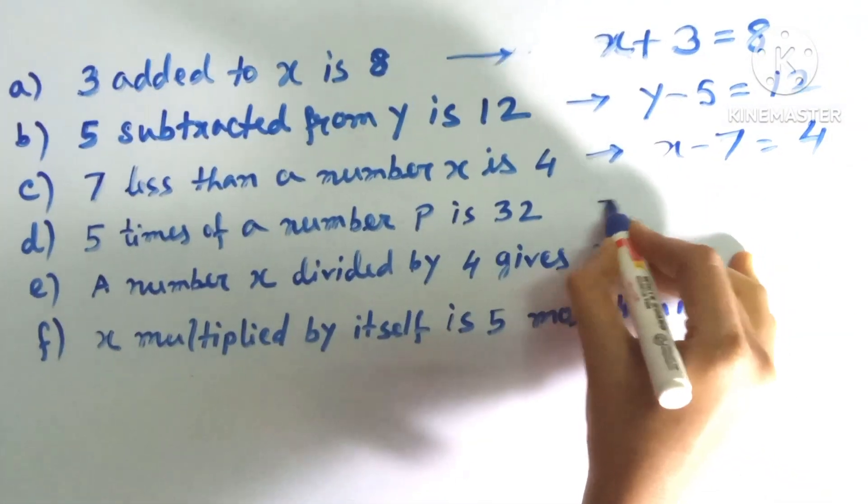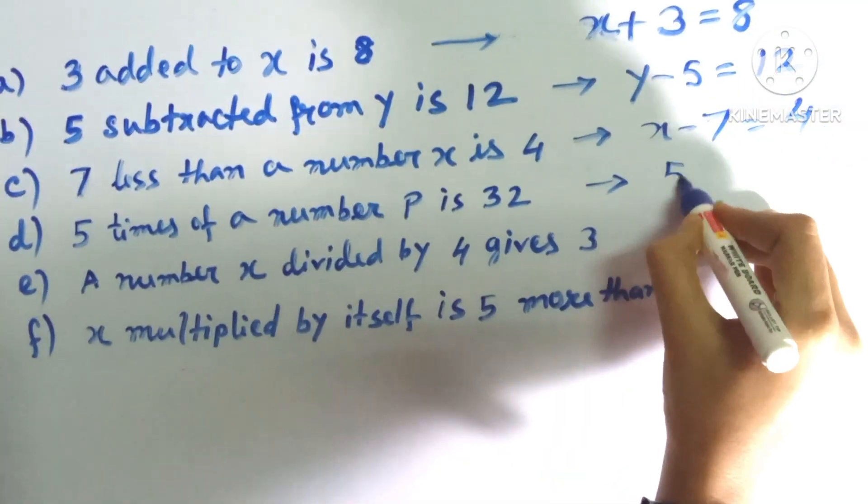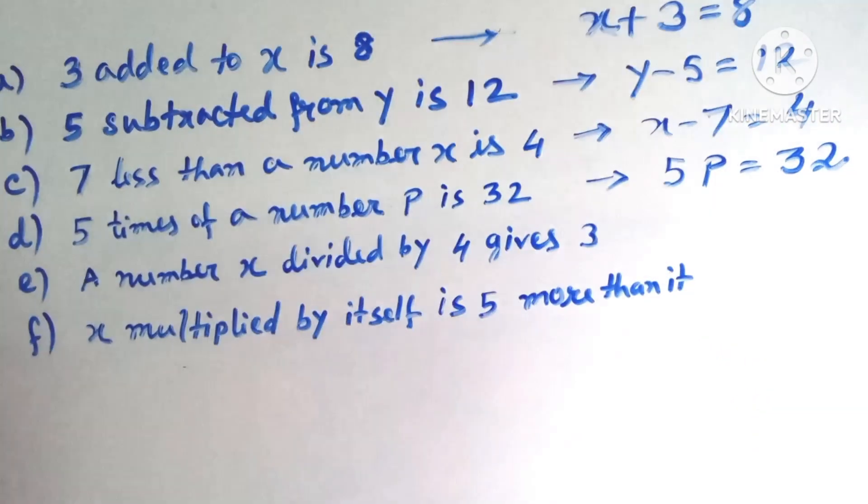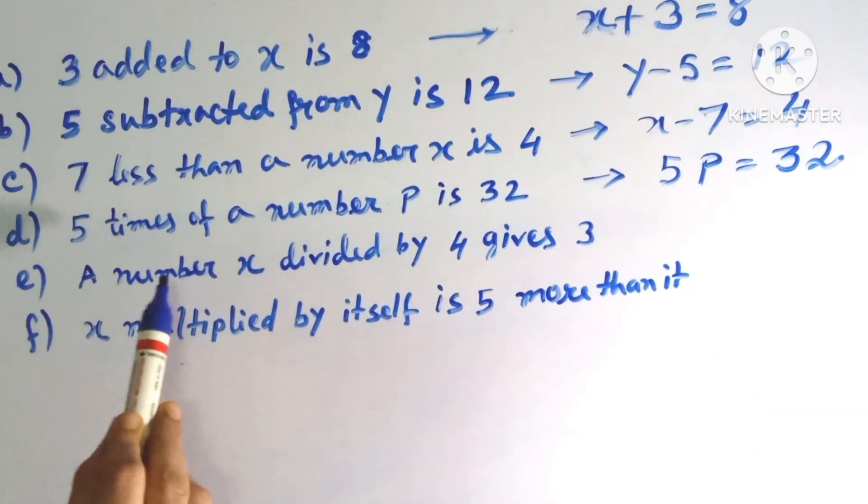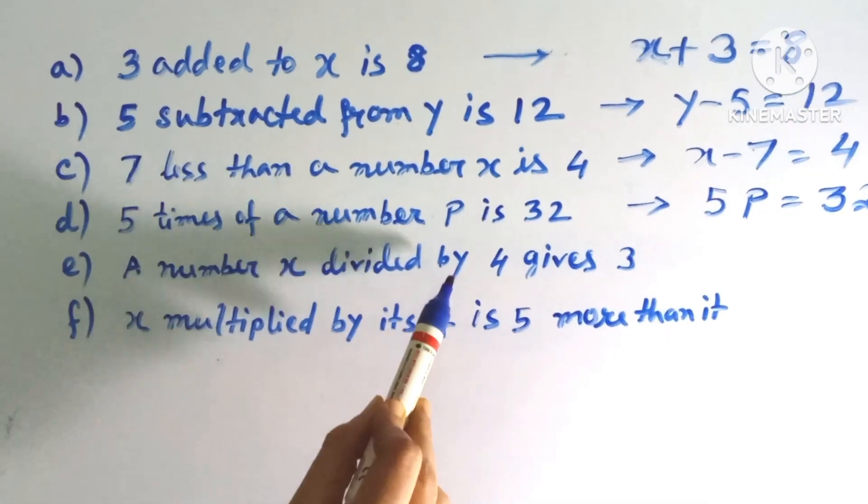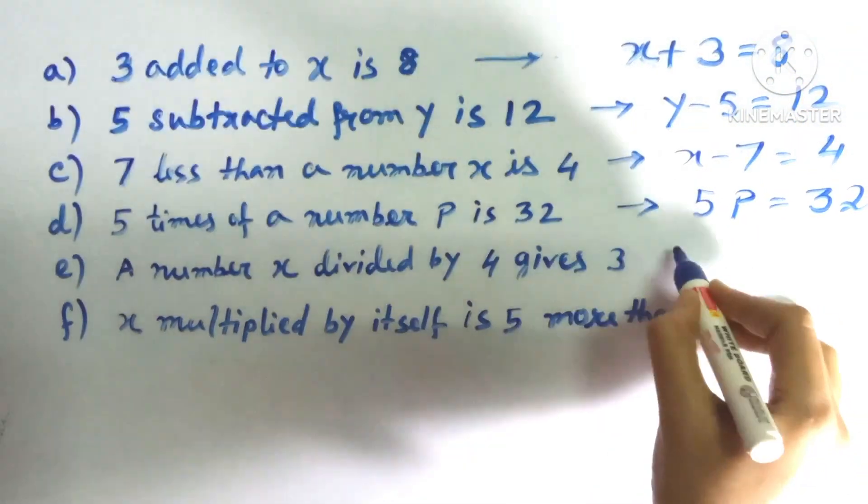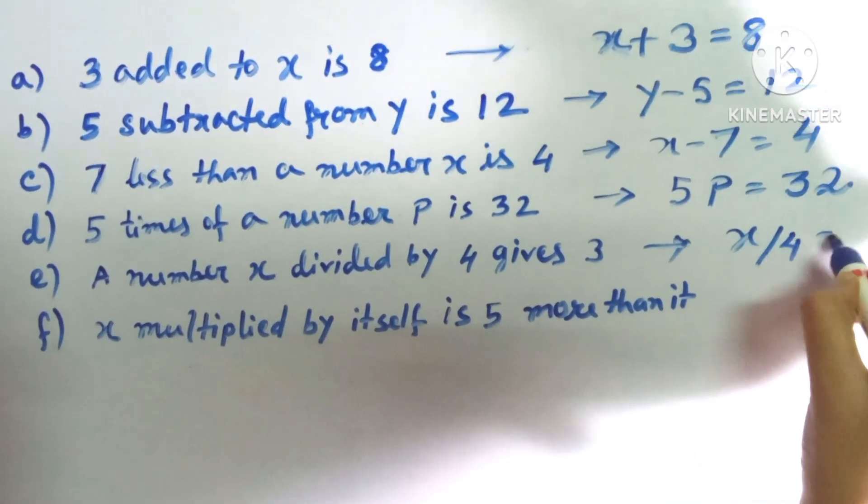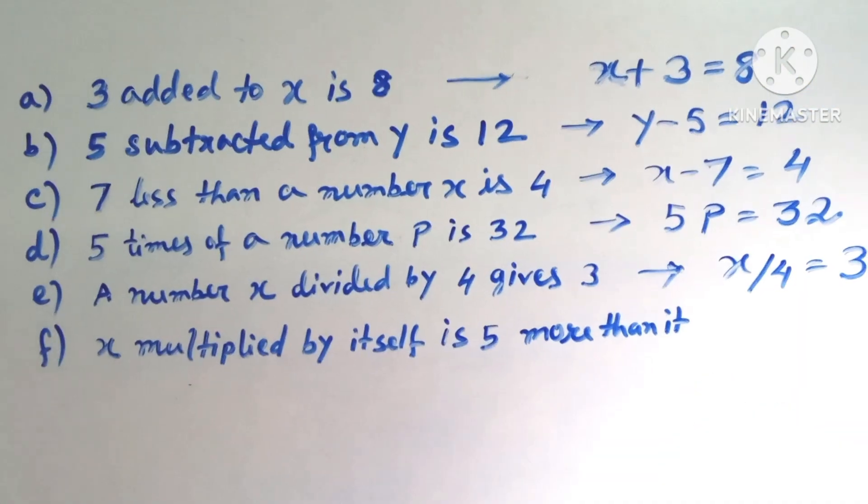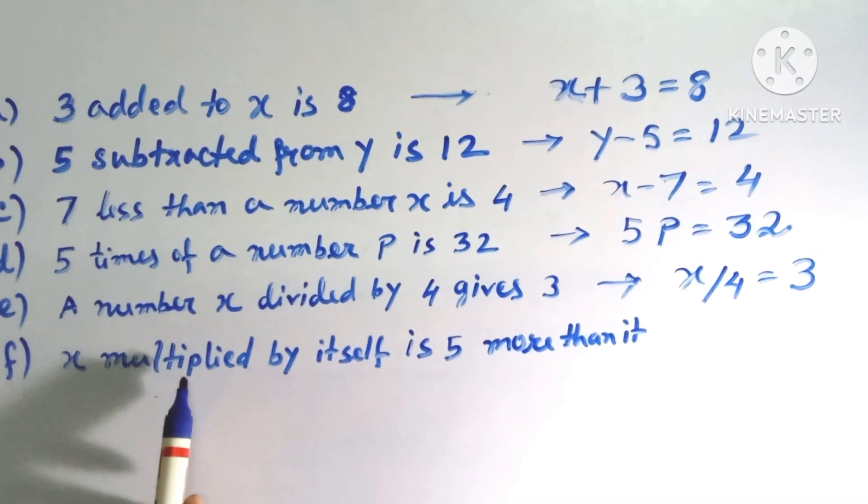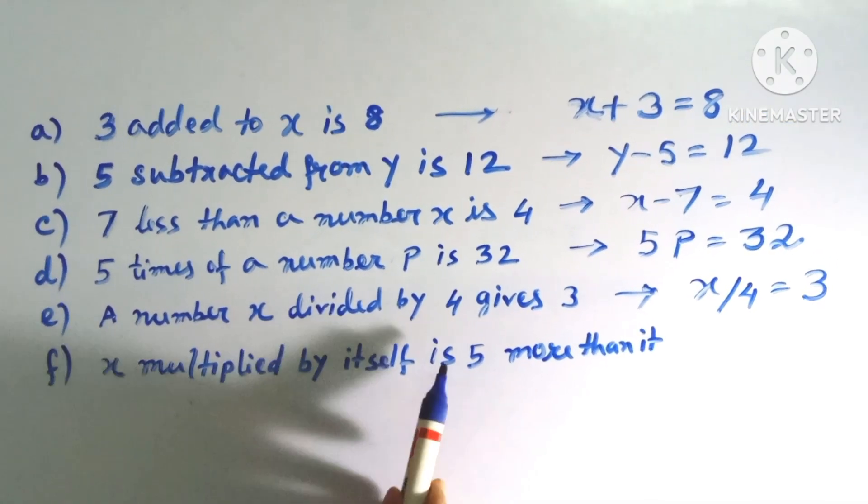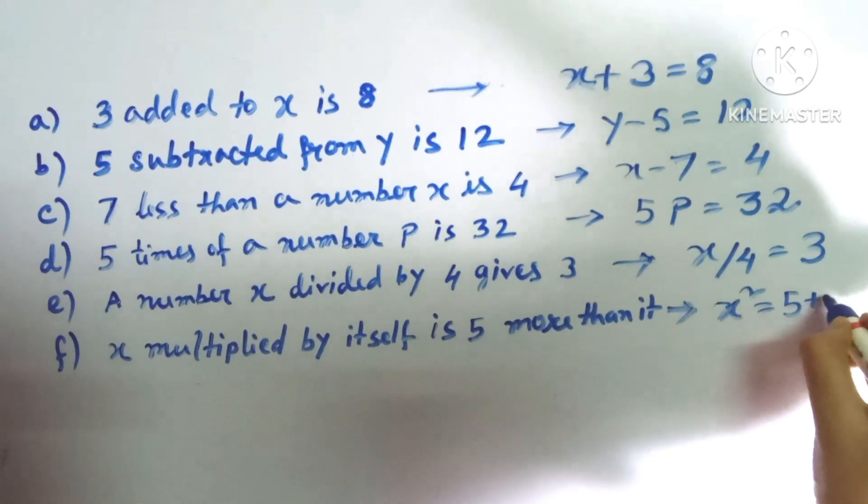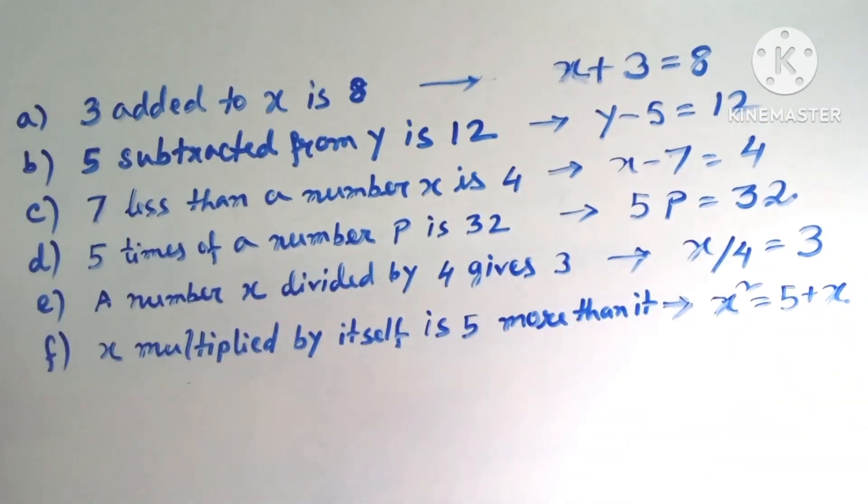Fourth: 5 times of a number P is 32, the equation will be 5P equals 32. Fifth: a number X divided by 4 gives 3, the equation will be X by 4 equals 3. Last one: X multiplied by itself is 5 more than it, it will be X squared minus 5 plus X.